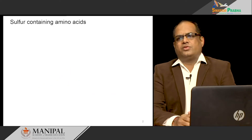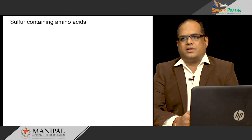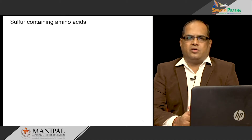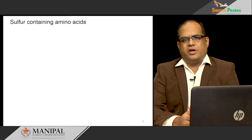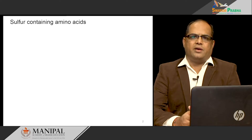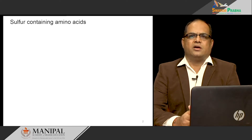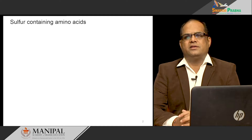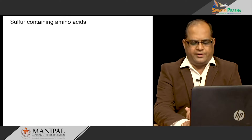First, we should know what are sulfur-containing amino acids. Out of 20 amino acids, 3 amino acids are sulfur-containing amino acids. Those are cysteine, cystine, and methionine.